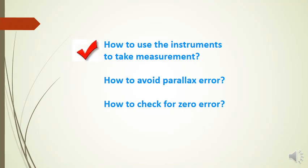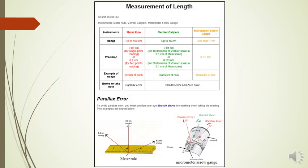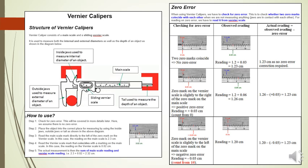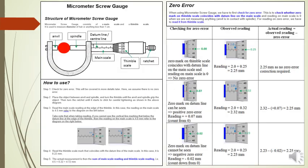How do you use instruments like the meter rule, vernier calipers, and micrometer screw gauge to take measurements? How do you avoid parallax error, and how do you check for zero error? Please pause the video and take about 5 to 10 minutes to read the following slides to recall what you learned in Form 4 Physics, Chapter 1, covering measurements of length, parallax error, the structure and use of vernier calipers, zero error, and the structure and use of the micrometer screw gauge.